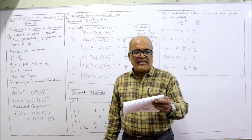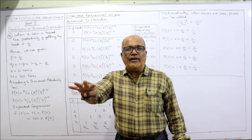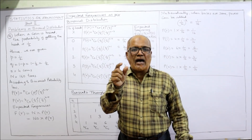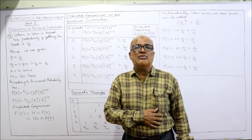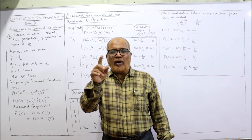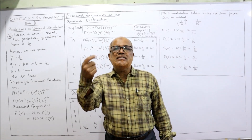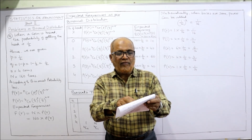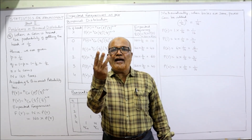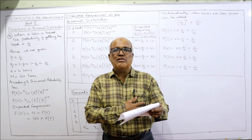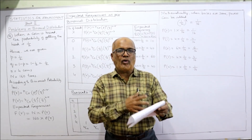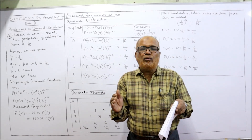The actual data recorded: zero heads — frequency 18, meaning out of four coins no head at all, all four showing tails — this happened 18 times out of 160. One head, three tails — 52 times. Two heads, two tails — 54 times. Three heads, one tail — 32 times. All four coins showing head — 4 times. This is the actual frequency data.